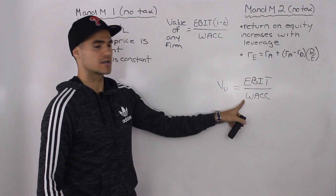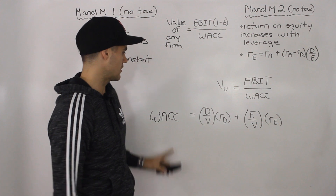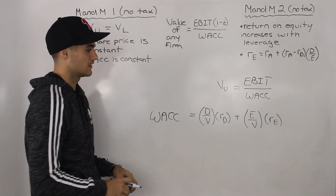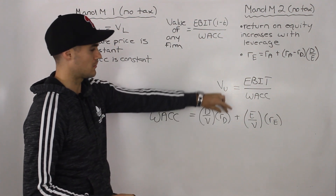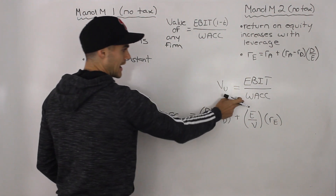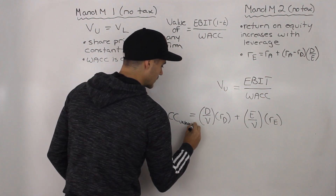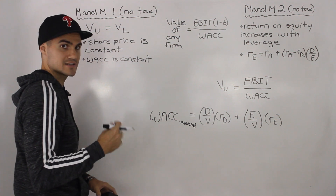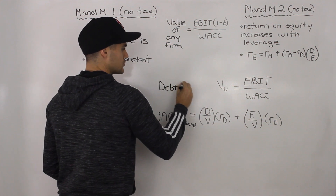What's the weighted average cost of capital for an unlevered firm going to be? A good start is to write down the general WACC formula: (D/V) times Rd plus (E/V) times Re. And remember there's no (1 minus t) here because we're dealing with no taxes. For an unlevered firm, the firm has no leverage, meaning debt equals zero, so this whole debt portion of the formula is going to be zero.